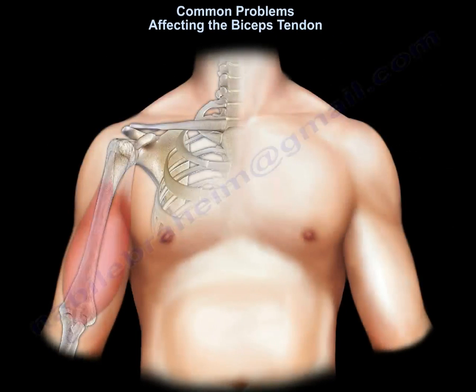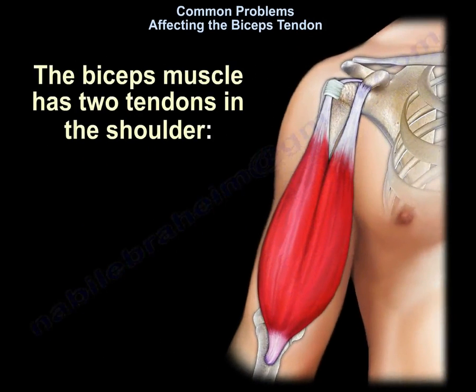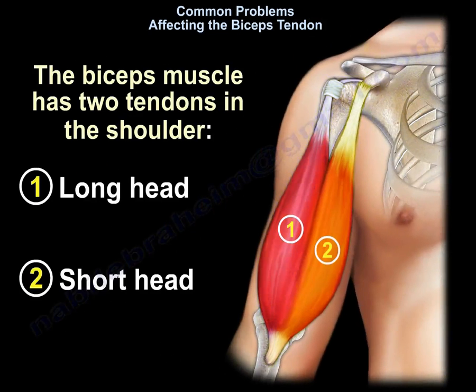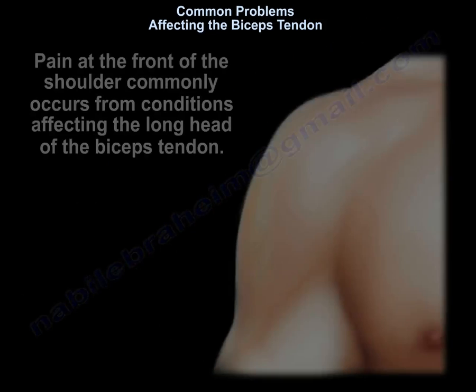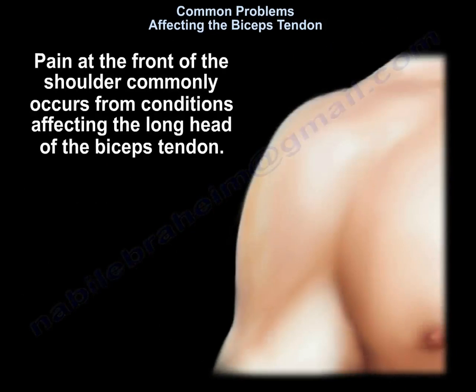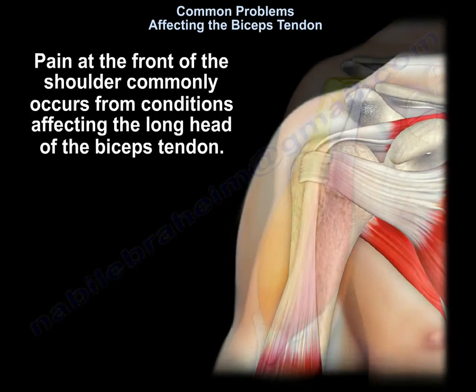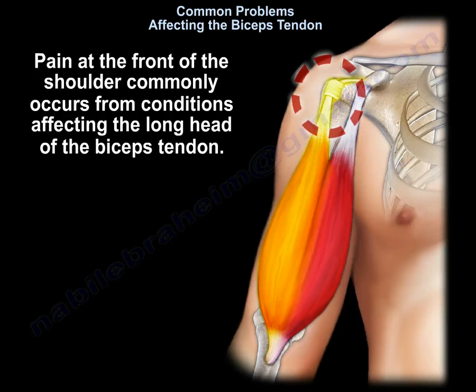Common problems affecting the biceps tendon. The biceps muscle has two tendons in the shoulder: the long head and the short head. Pain at the front of the shoulder commonly occurs from conditions affecting the long head of the biceps tendon.